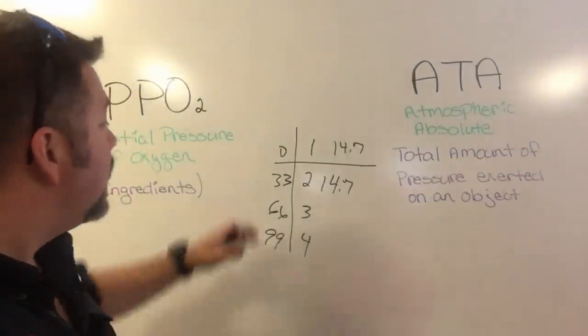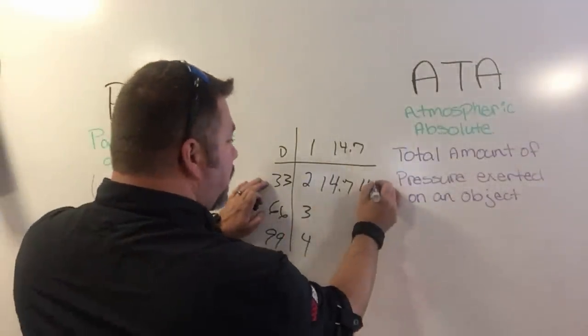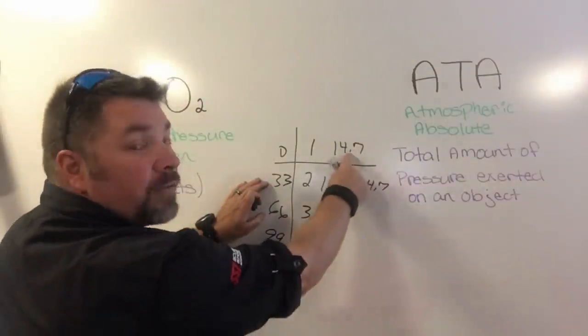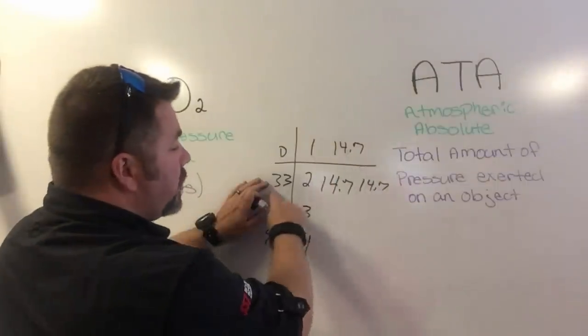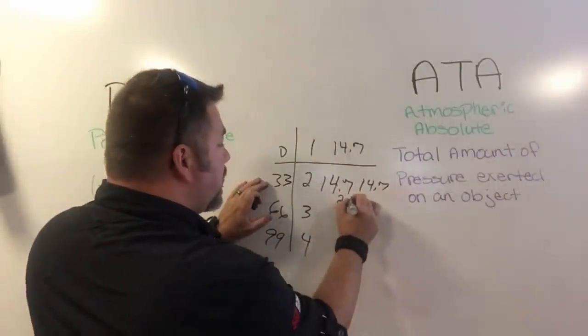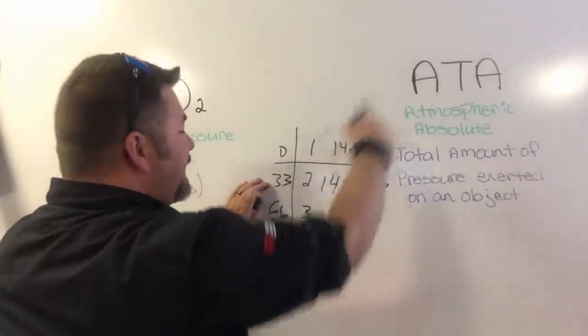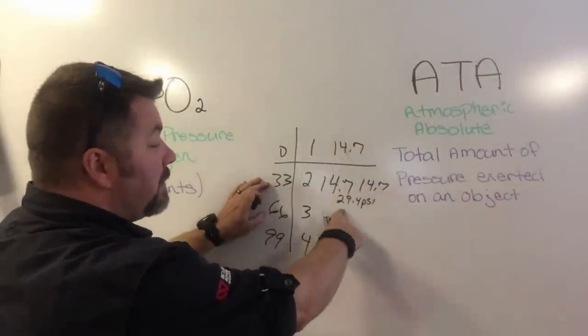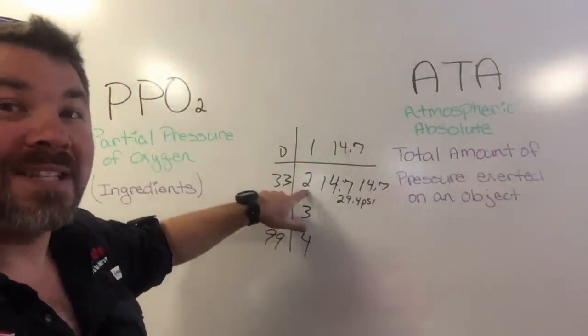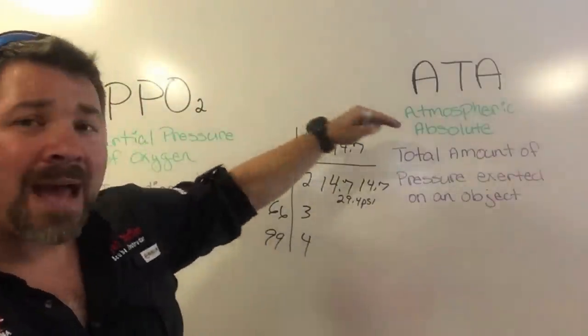Here at the surface, I have 14.7 pounds per square inch of weight squeezing in on my body. When I get to a depth of 33 feet, I've increased that atmospheric pressure by an additional 14.7, giving me a total of 29.4 psi. So the ATA at 33 feet is simply 29.4 psi, or two ATA.